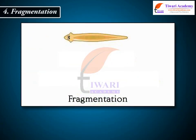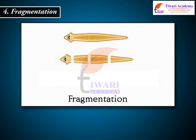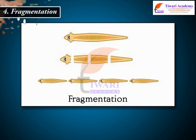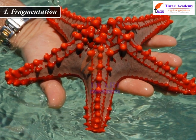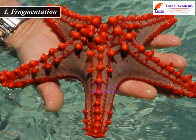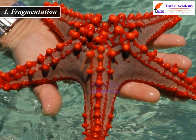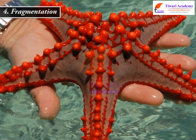Fragmentation involves the breaking of a parent organism into two or many fragments. Each fragment develops into an individual organism. Fragmentation is seen in sea stars, which accidentally break their body into fragments.